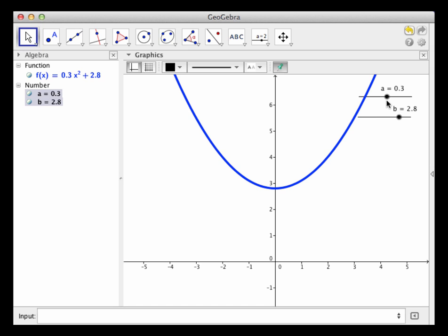But notice that no matter what member of the family we're observing, they all have certain things in common. For example, each member of the family appears to have a critical value at x = 0.